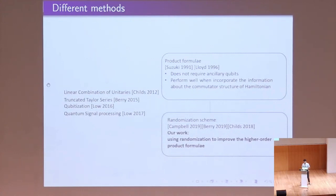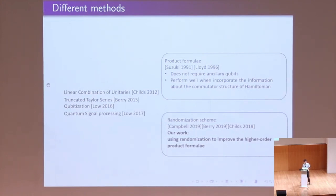These methods are quite competitive. They use either ancillary qubits, controlled operations, or amplitude amplification. But today we put more focus on the product formula, which is one of the methods proposed in the 1990s. It has several advantages: it is quite simple and does not require any ancillary qubits, making it quite suitable for near-term devices. Also, when we consider the specific structure of the Hamiltonian, it can give us a pretty good bound to evaluate the performance of the product formula.